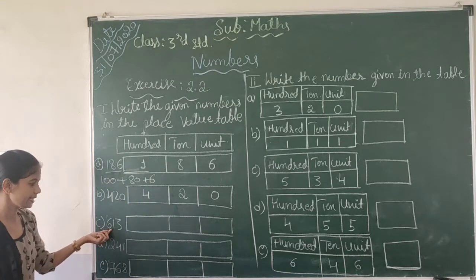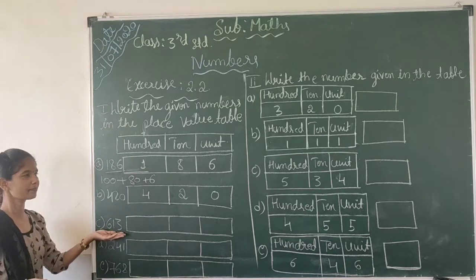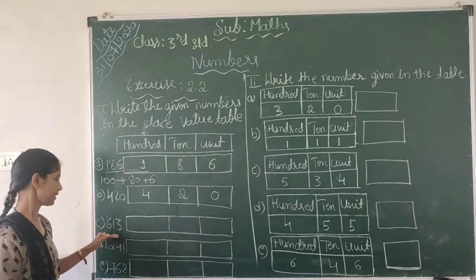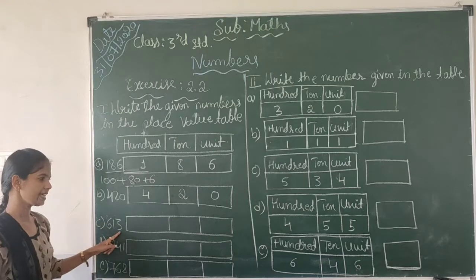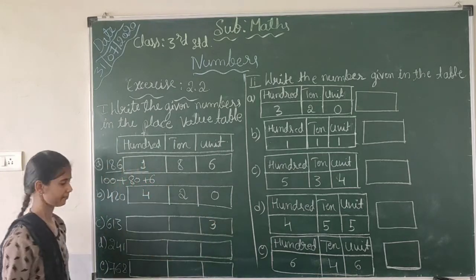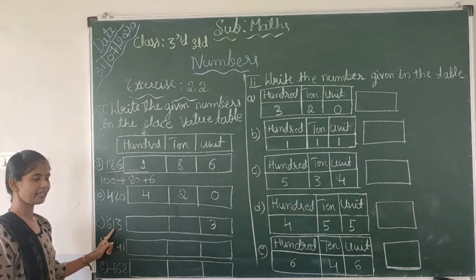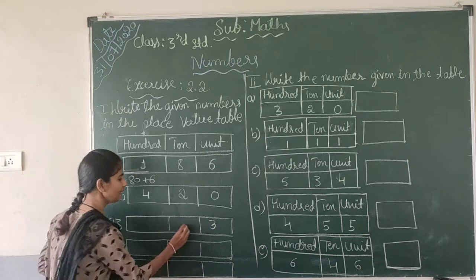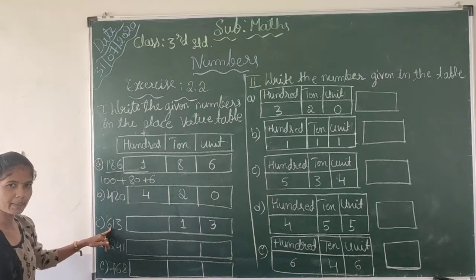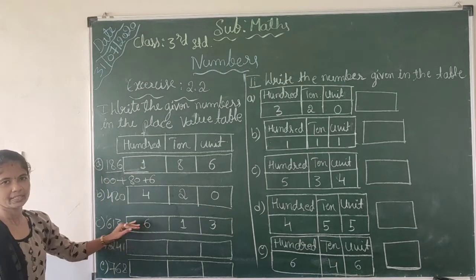One more: 613. We can expand this as 600 plus 10 plus 3. Got it? So 3 is in the units place. Before 3, 1 is placed in the 10's place. And 6 is in the 100's place.